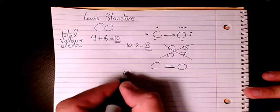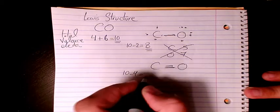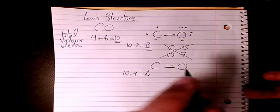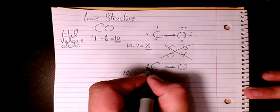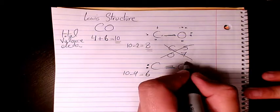So it's going to be 10 minus four—two times two—so it's going to be six. If I have two in here and if I have four in here.